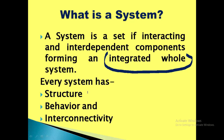Every system has a structure, every system has behavior — that is, functionality. Every system performs some function within the integrated whole. They are all interconnected, meaning every system has interconnectivity. The components, which can also be referred to as parts or business processes, interact with each other, are interdependent, and each subsystem has its own structure, its own functionality, and they are all interconnected with each other.